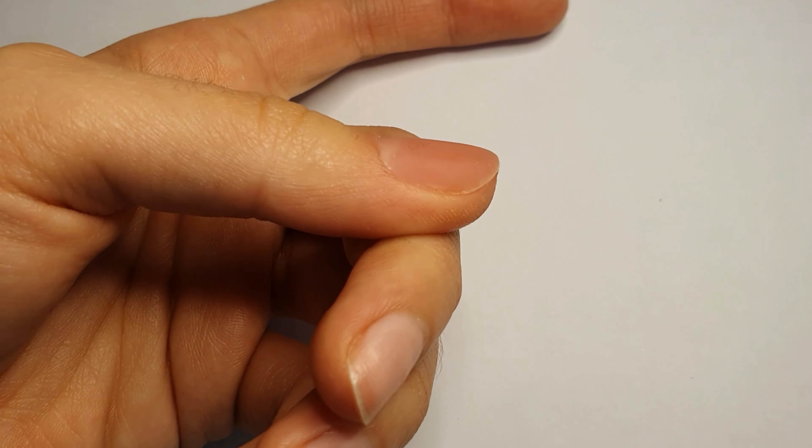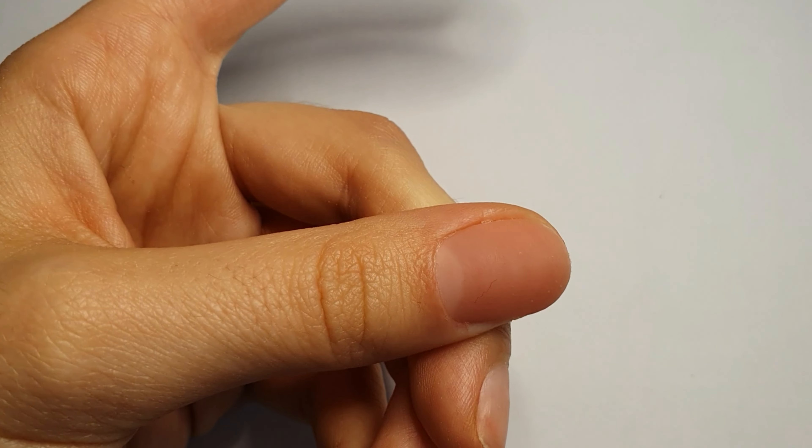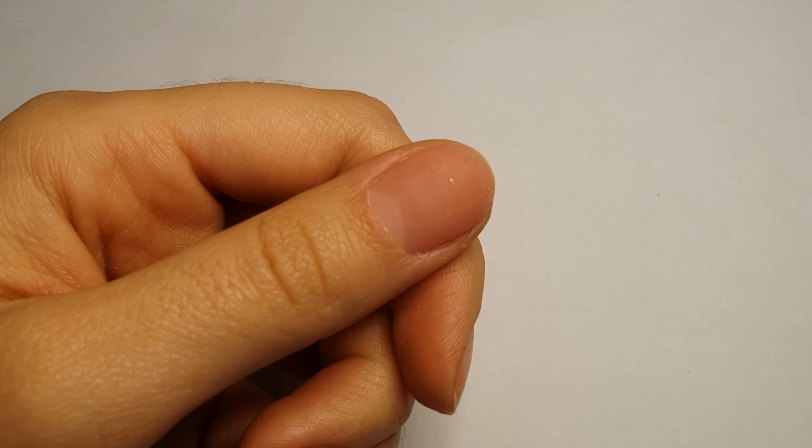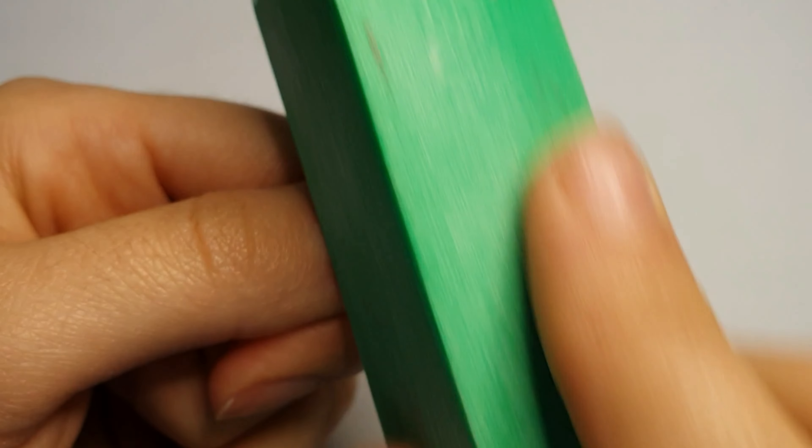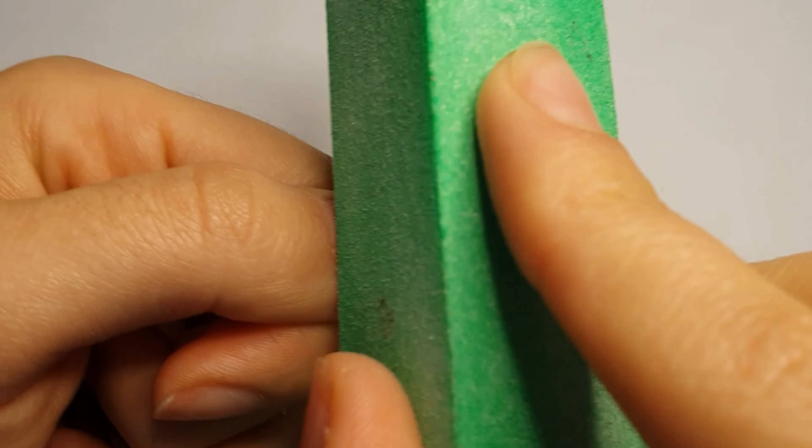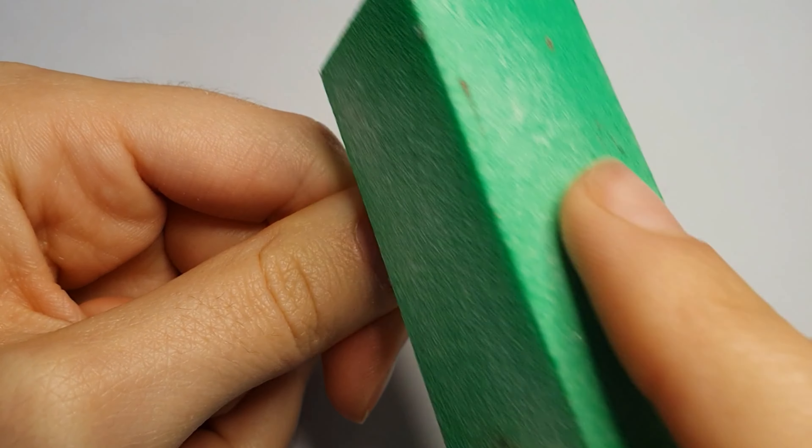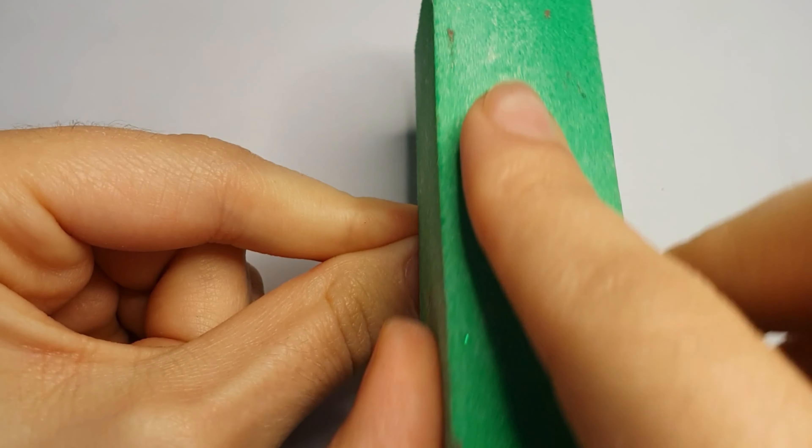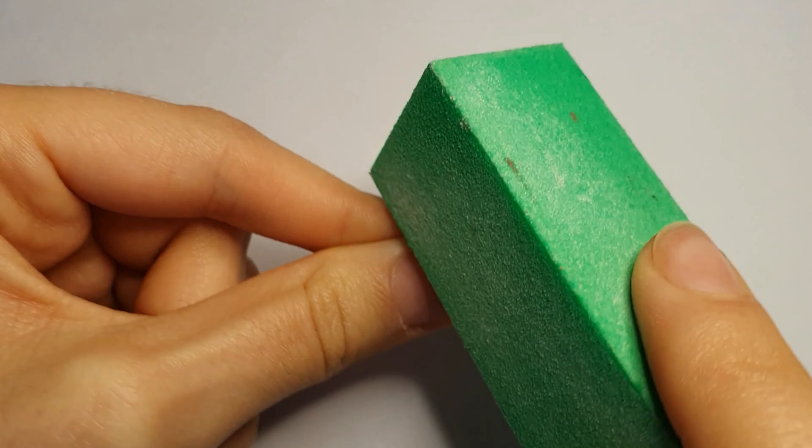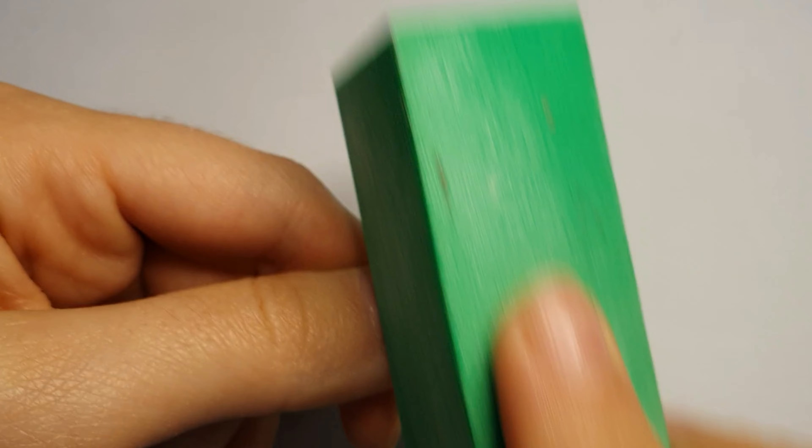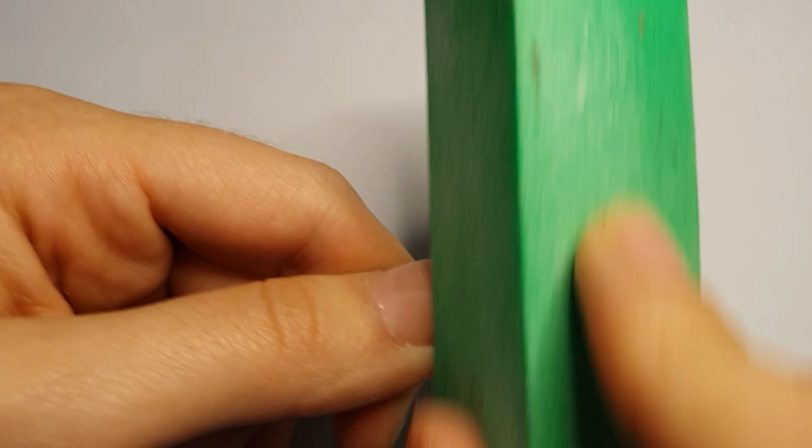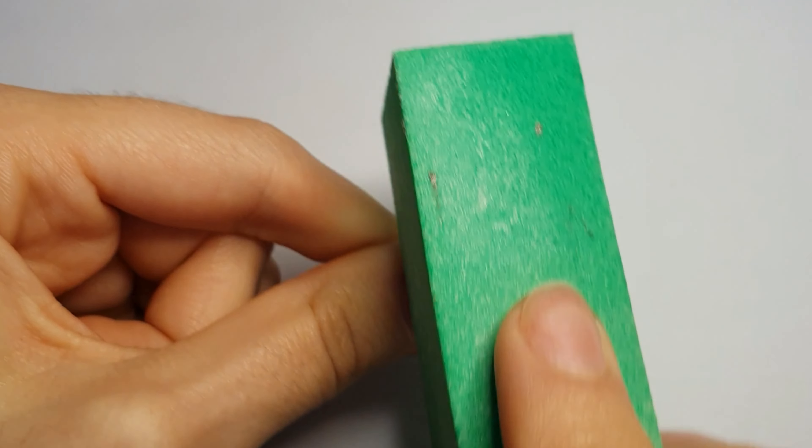Now I'm using a lime block. This makes the nail even more ready for the polish application because it will look better.